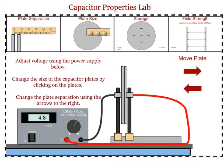When your capacitor properties lab opens up, you'll have your power supply set to a certain voltage and your plates set a certain distance apart. You'll have four tabs across the top where you can view plate separation, plate size, storage, and field strength.